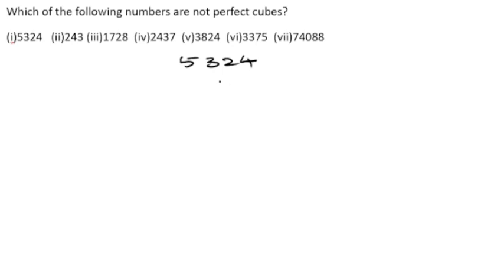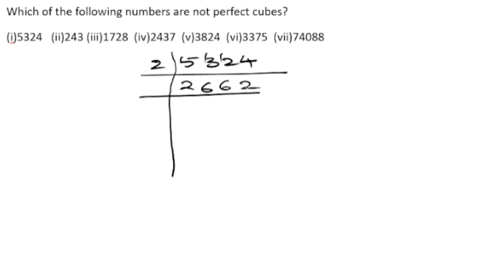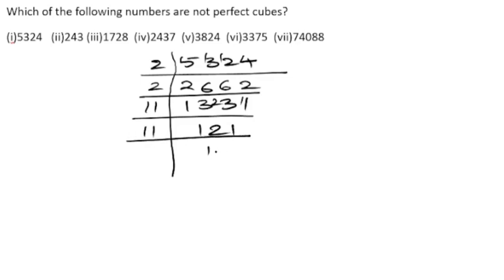We will take out the factors of 5324. Starting with 2 since the last digit is 4, we divide repeatedly by 2. Then we check for 11, since 11 ones are 11, and we find that the factors of 5324 are 2 × 2 × 11 × 11 × 11.